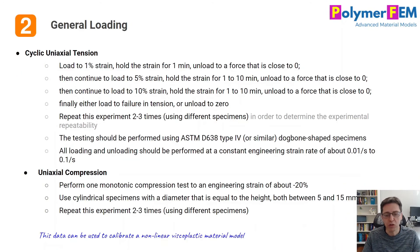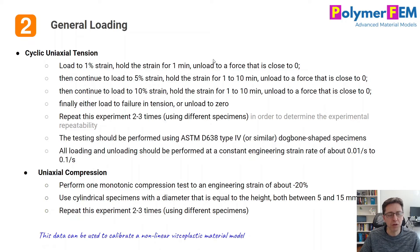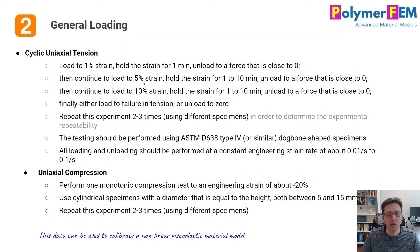If you want more accurate results, you need to do a little bit more experimental work. For general loading situations, here is the detailed plan I often follow. I do most of the testing in uniaxial tension because tension is easy to do and you can measure strain accurately using digital image correlation. The plan is: load to approximately 1% strain, hold for about a minute, then unload to near-zero force. Reload to a larger strain, perhaps 5%, hold for one to five minutes. Then unload and reload to 10% strain.